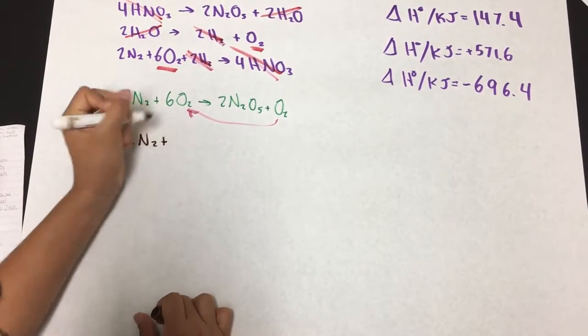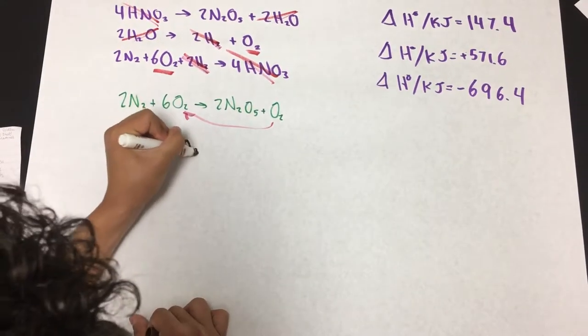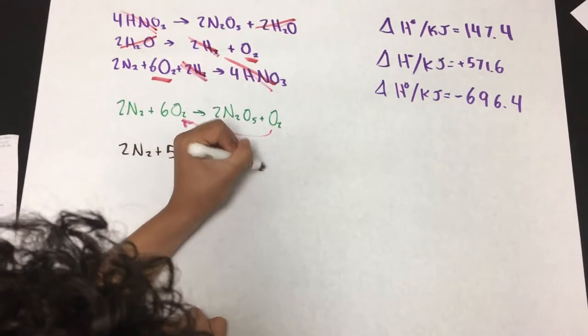2N2 plus subtracted. It will be 1 less O2. So it's 5O2 yields 2N2O5.